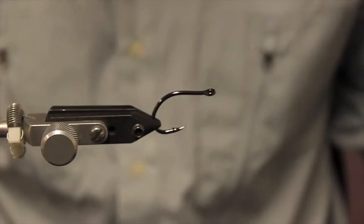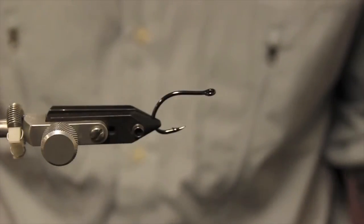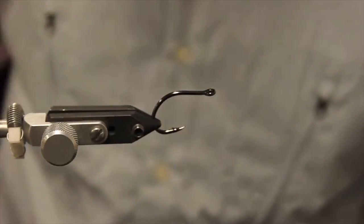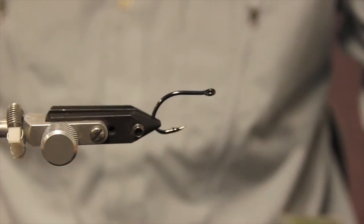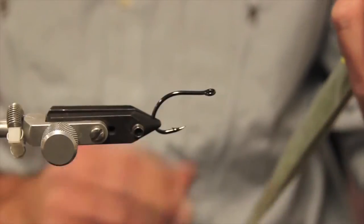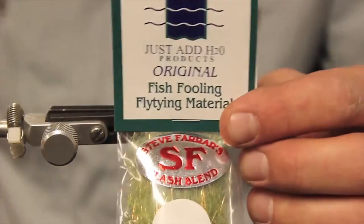So they sink it down. So if you're fly, when you're stripping it in as fast as you can, it's not skipping on the surface. It's still staying submerged. And then the material for the body on this, we just use simple crystal flash. And we use this, it's called Steve Farrar's Flash Blend.